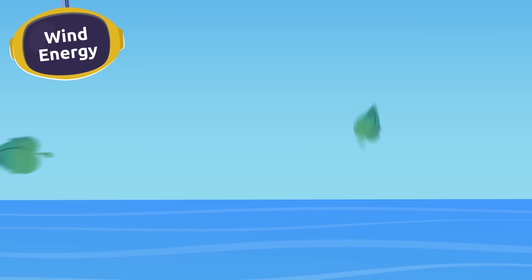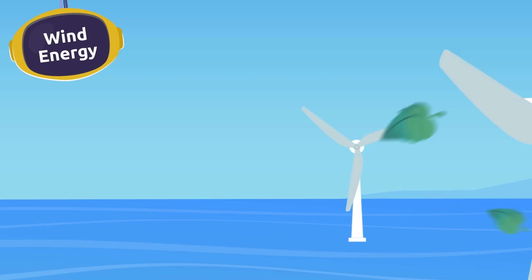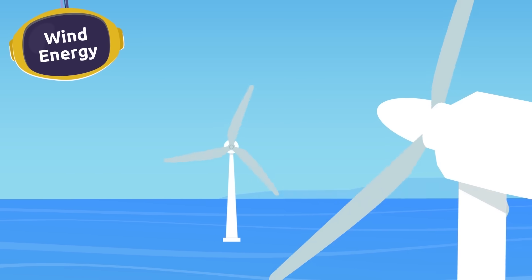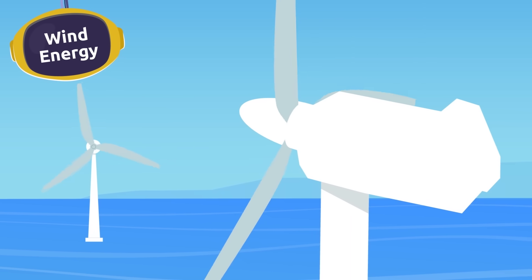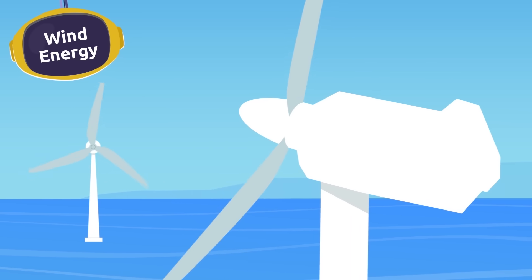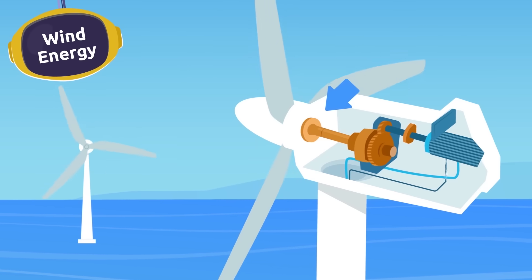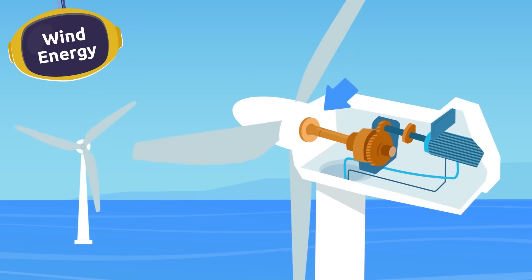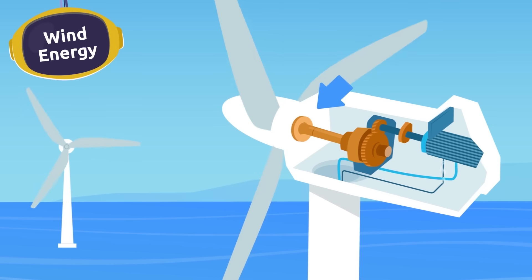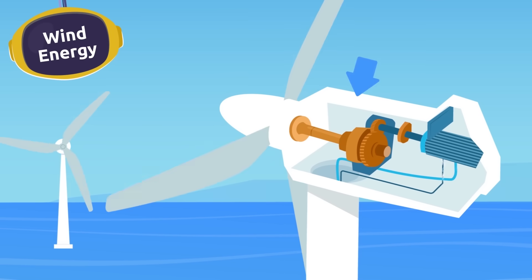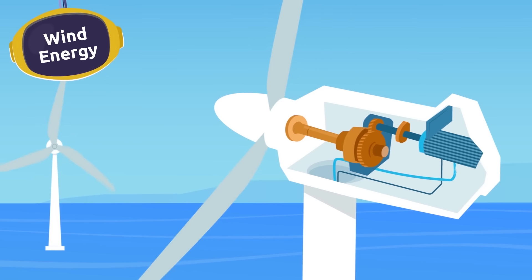Another way we can get electricity is by using the force of the wind — in other words, wind energy. Have you ever seen wind turbines? When the wind blows and pushes the blades of the wind turbines in a circular motion, it also turns a shaft which activates the generator, producing electricity.